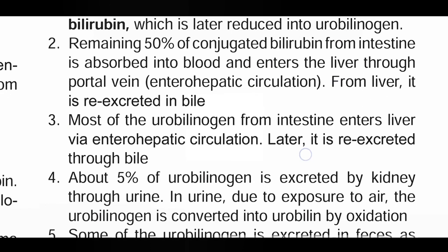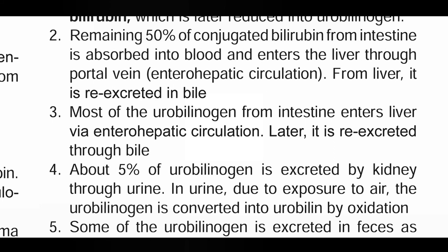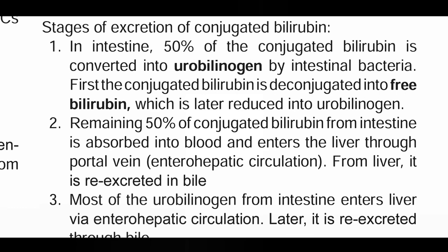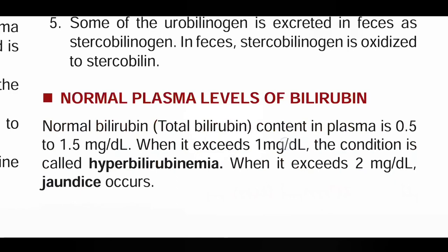The remaining 50% of conjugated bilirubin from the intestine is absorbed into the blood and enters the liver through the portal vein. This is the enterohepatic circulation.